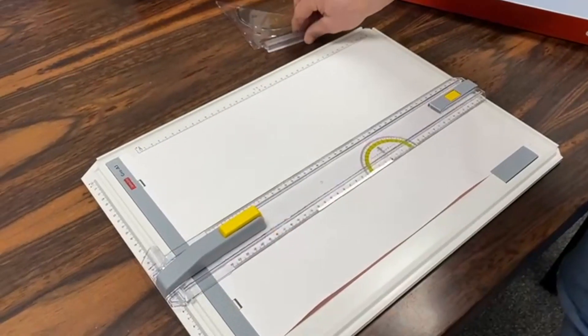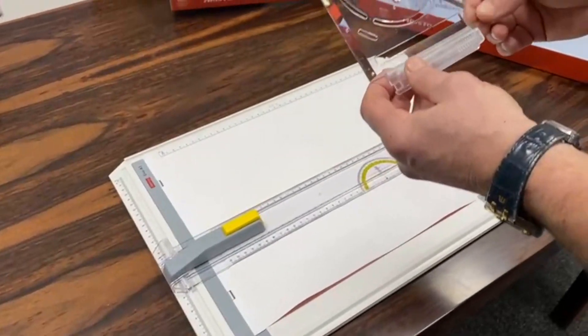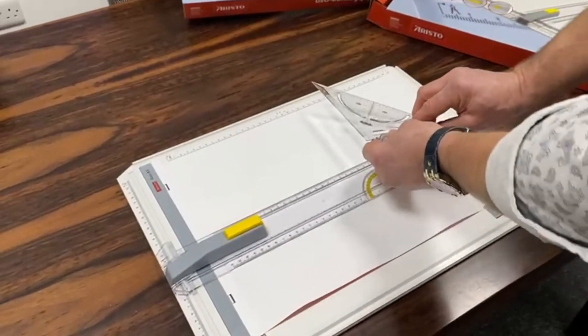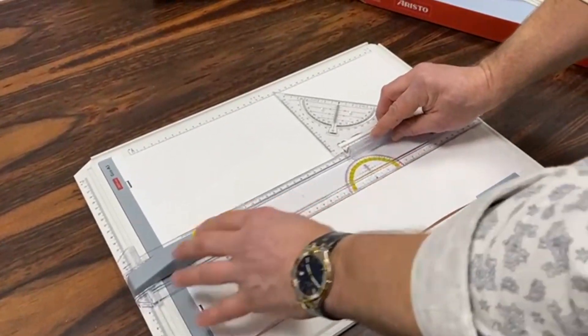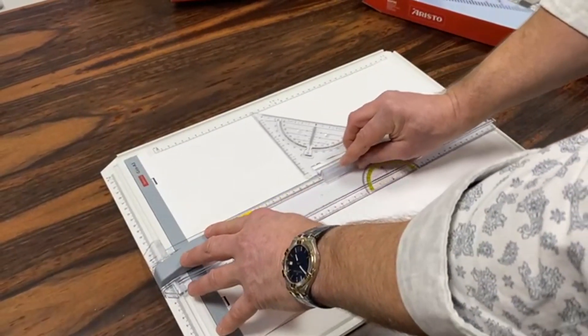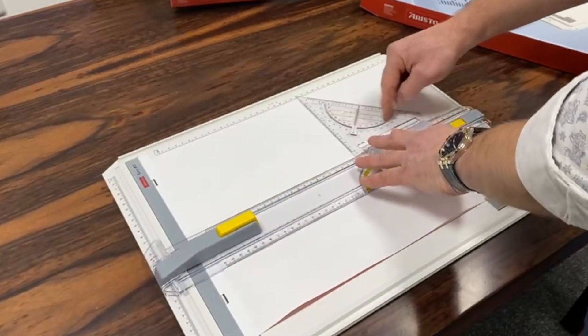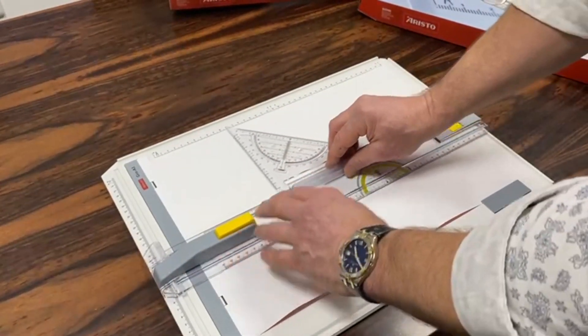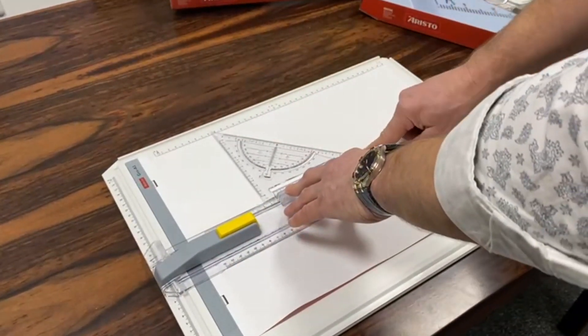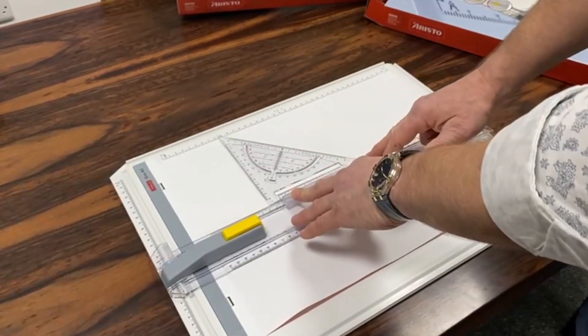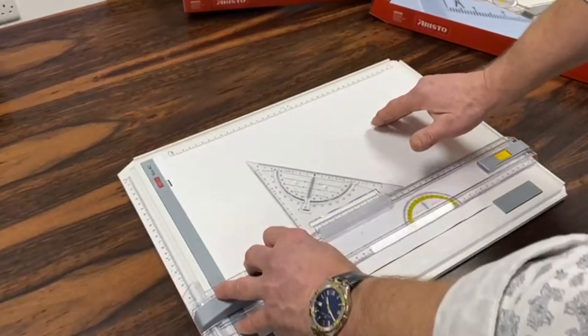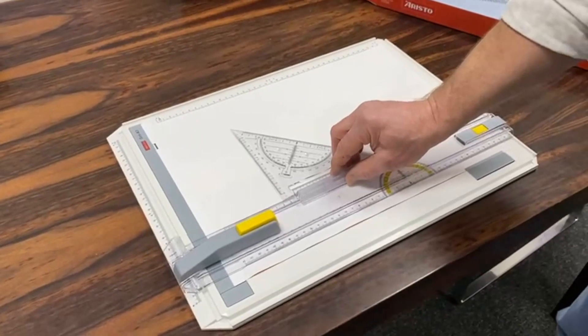Also included free of charge is a small drawing aid which fits on the top of the ruler and slides easily along the top. It features a protractor and a 17 centimeter hypotenuse edge, giving you some extra features to draw with.